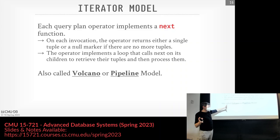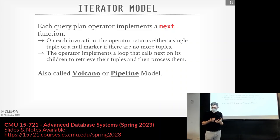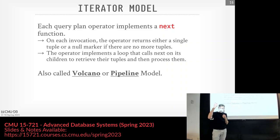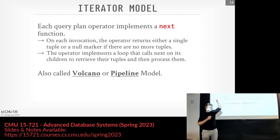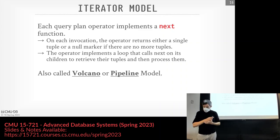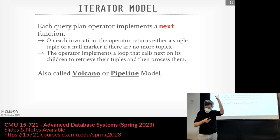The iterator model is sometimes called the pipeline model or the volcano model. This is basically how the first database systems were implemented in the 1970s. The Volcano paper came out in the early nineties and described the high-level idea of what this approach is actually doing — it gave the taxonomy and nomenclature for describing it. The way it works is that every query plan operator has a 'next' function. On invocation, every time you call next on this operator, it's responsible for returning back the next tuple in its stream of data that it's processing, or returning null to indicate it has no more data.